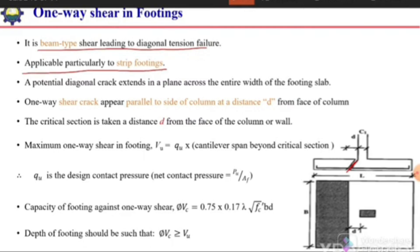A potential diagonal crack extends in a plane across the entire width of the slab. This type of inclined crack will appear at a distance d from the face of the column across the whole width of the slab.